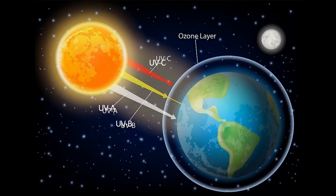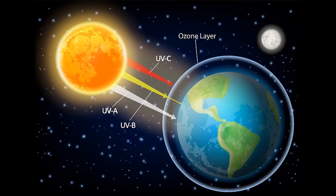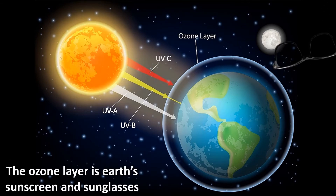Now that we know a bit about the basic function of each form of UV, we can see how they interact with the ozone layer. Starting with UV-A, this goes straight through with very little natural defense from the ozone. UV-B is filtered by the ozone and we receive a reduced dosage. Finally, UV-C is completely absorbed by the ozone layer and keeps us safe. That's why the ozone layer is Earth's sunscreen and sunglasses.